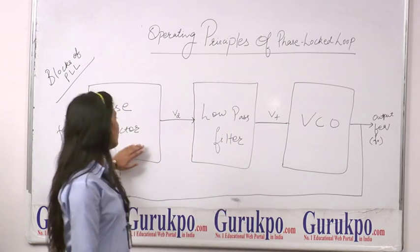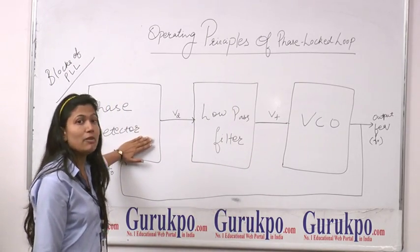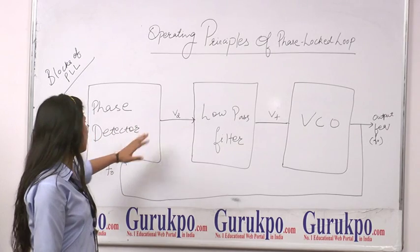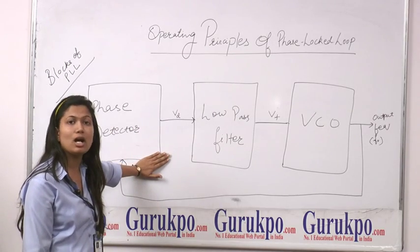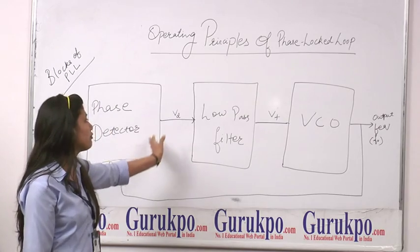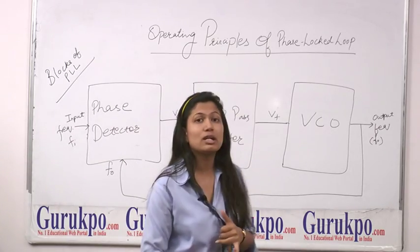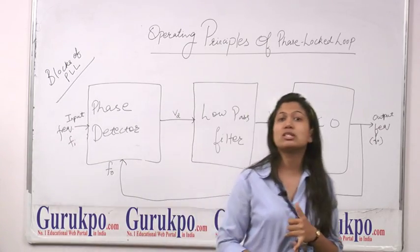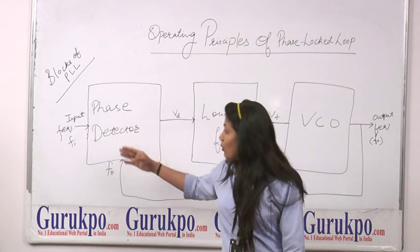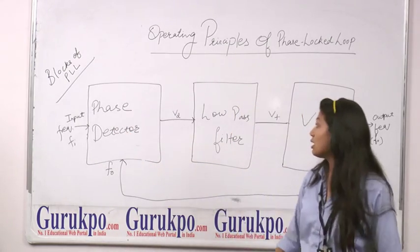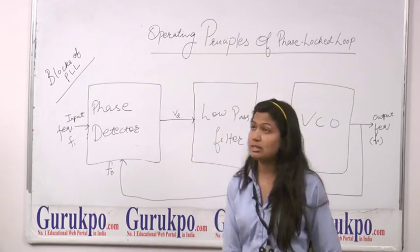The Phase Detector is a comparator which compares the difference between the input frequency and output frequency. Finally, it gives a DC voltage which is directly proportional to the difference between the input frequency and output frequency. The Phase Detector is followed by a Low Pass Filter.